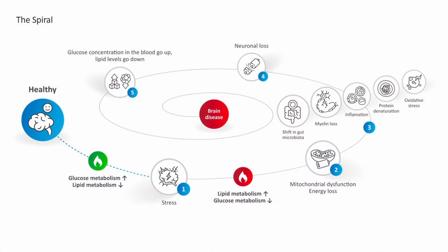In a healthy brain you have high glucose metabolism and very low lipid metabolism. What happens when you put stress on a person is that the metabolism in the brain starts shifting from glucose to lipid metabolism — now you get high lipid metabolism and very low glucose metabolism. Specifically, if this happens over several cycles, or under very extreme stress, you get stuck in this high-lipid, low-glucose metabolic state.